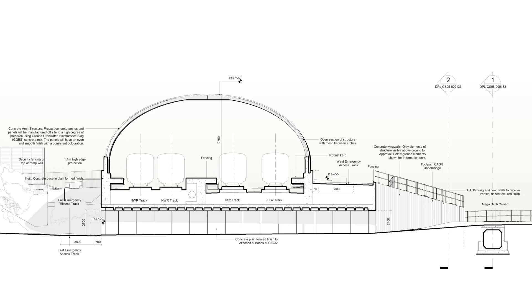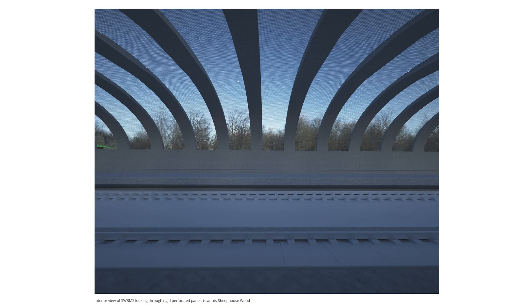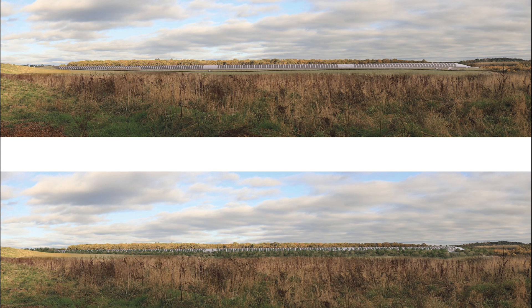The superstructure comprises three principal elements: a reinforced concrete plinth, an array of concrete arches springing from this plinth, and lightweight rigid perforated panels spanning between the arches. These two artists' impressions give some idea of how the structure will look when it's finished — the top one shows it just after completion, and the bottom one shows it as it would look a few years afterwards.